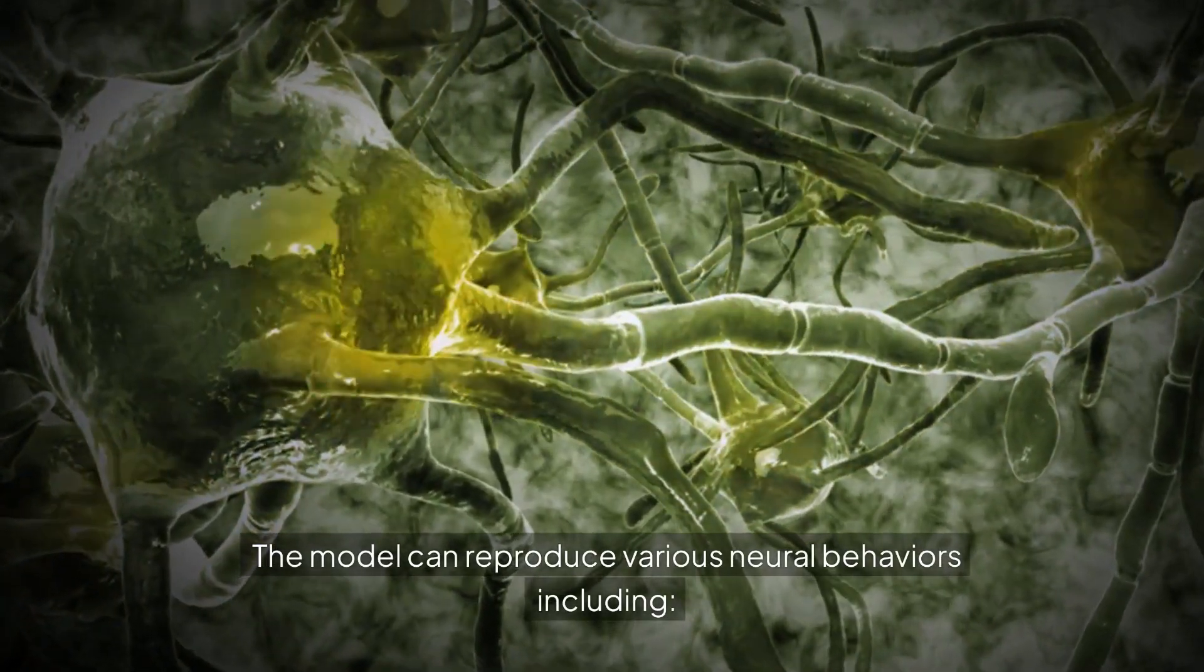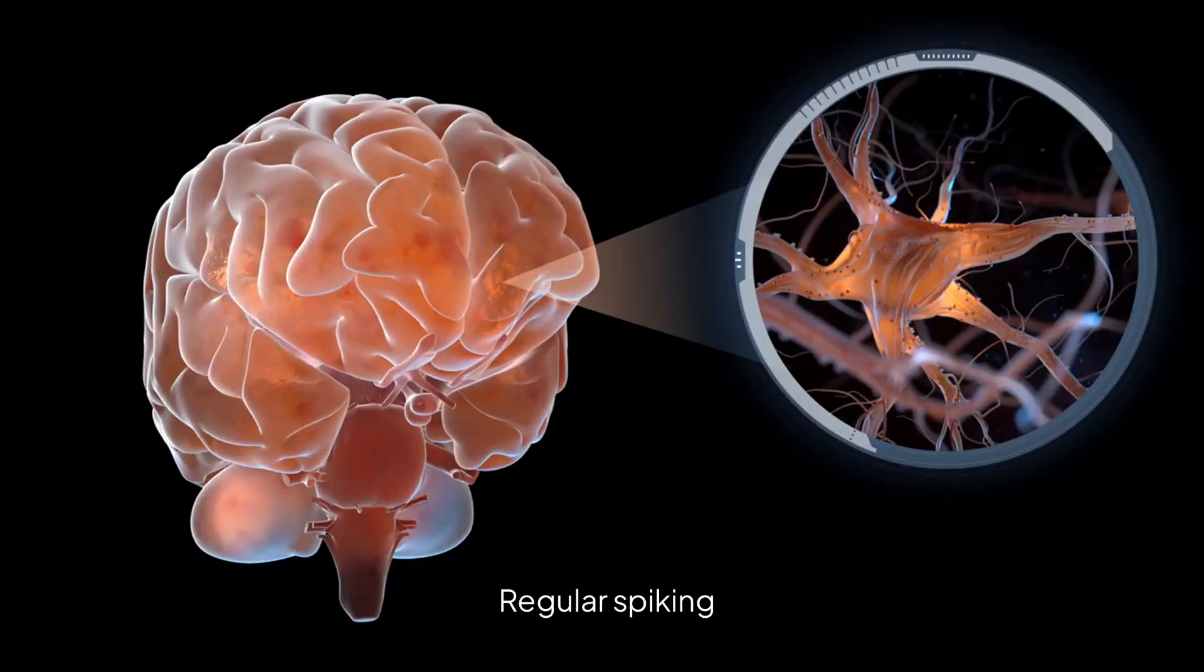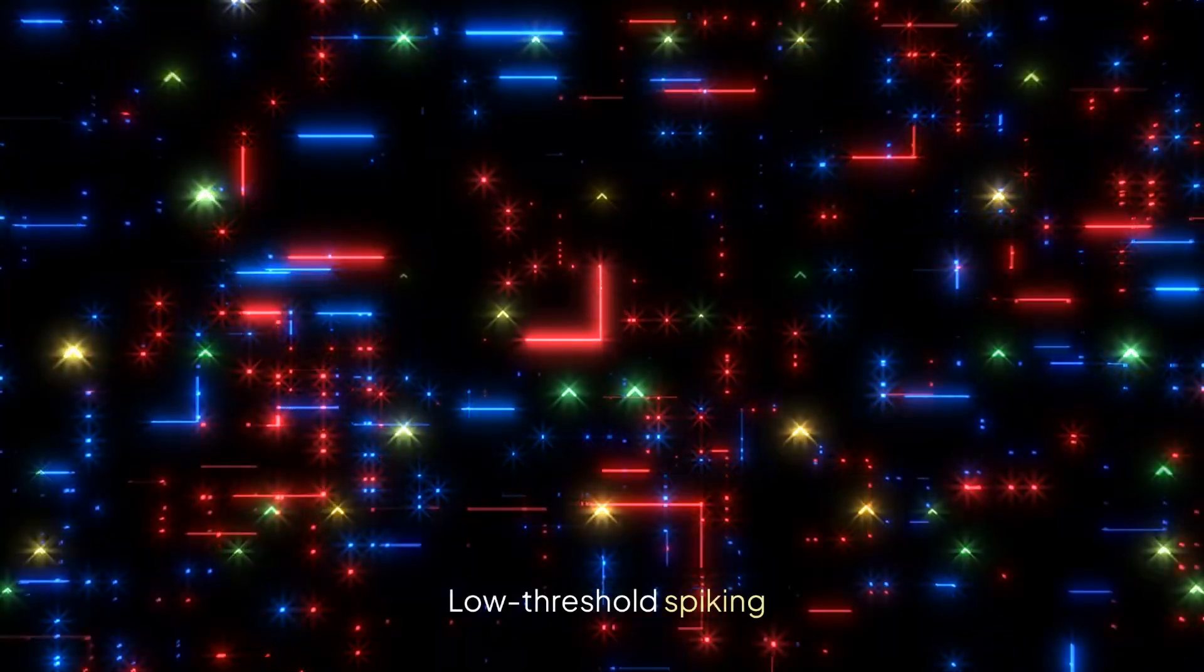Behavior types: The model can reproduce various neural behaviors, including regular spiking, bursting, fast spiking, low threshold spiking, chattering, and resonance.